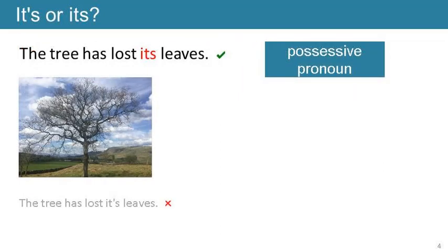The second mistake, which is much more common, is including an apostrophe in the possessive pronoun 'its'. The 'its' in the sentence 'the tree has lost its leaves' is not a contraction and does not need an apostrophe. In this case, 'its' is a possessive pronoun similar to 'his' in 'he's lost his keys' or 'our' in 'we've lost our way'.